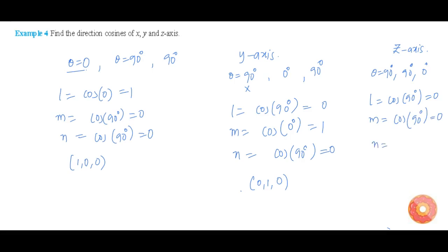And N is equal to cos of 0, which is equal to 1. Therefore, the directional coefficients of z-axis are 0, 0, 1.